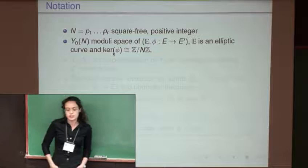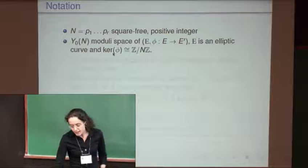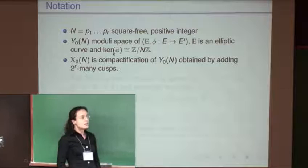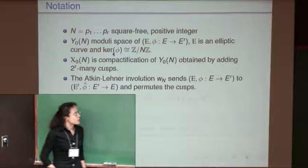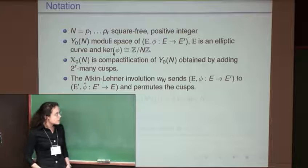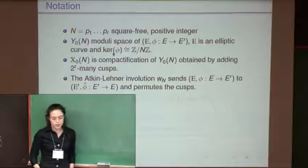N will be a square-free positive integer. By X₀(N) we denote the moduli space of tuples (E, φ), where E is an elliptic curve and φ is a cyclic isogeny of degree N. This is a non-compact curve, so we compactify it by adding a certain number of cusps. Importantly, these cusps are points defined over the rationals — they are rational points on the compactified curve X₀(N). Another important feature is the Atkin-Lehner involution, which takes a tuple (E, φ) and dualizes the isogeny, sending it to (E', φ̂). Since the isogeny and its dual have the same degree, this is still a point on our curve.